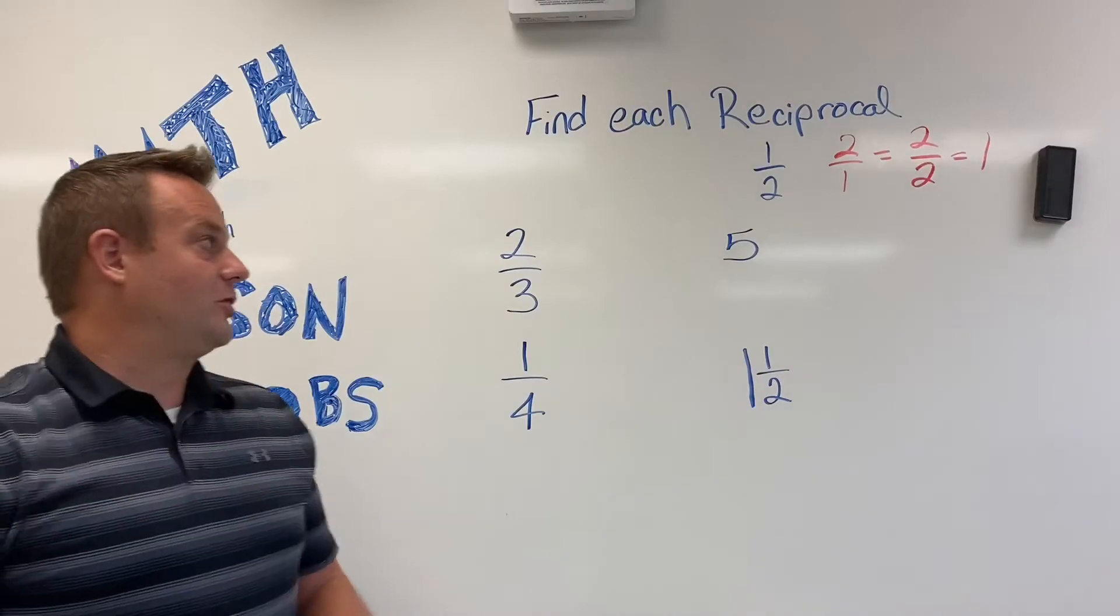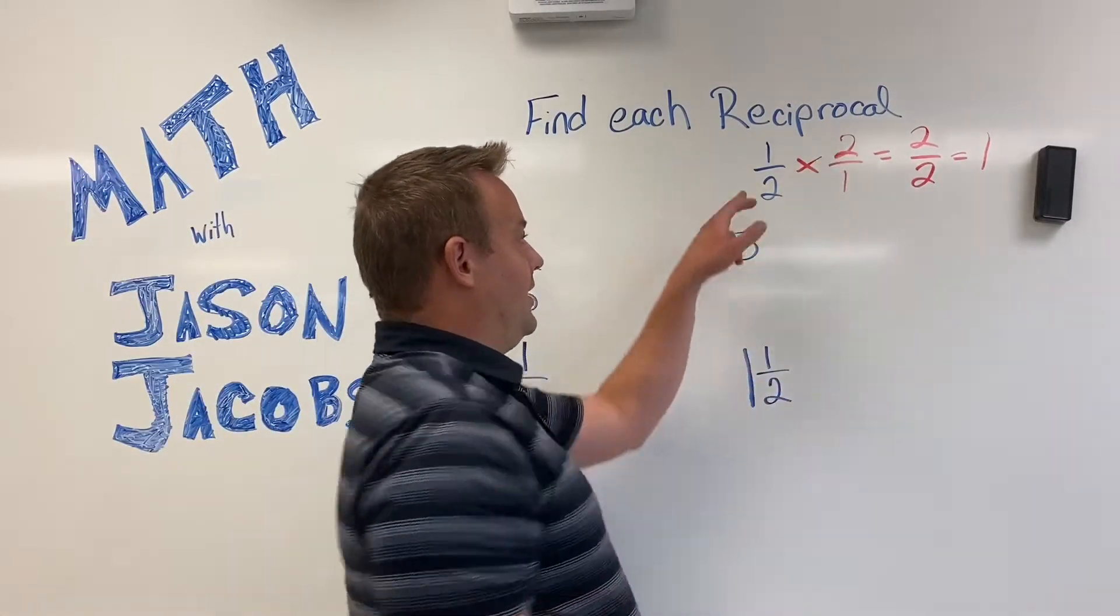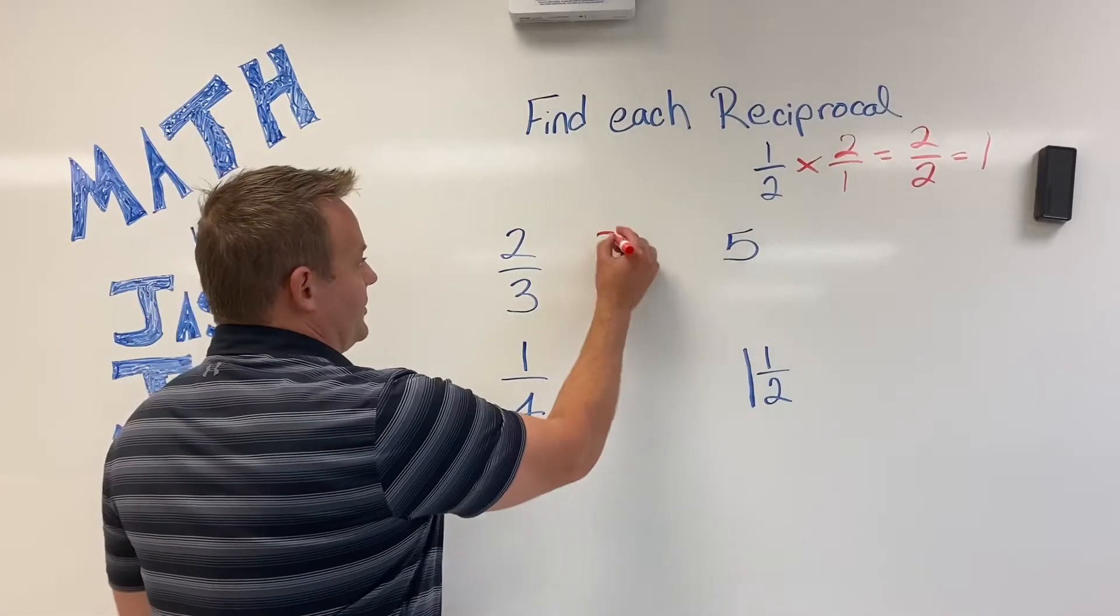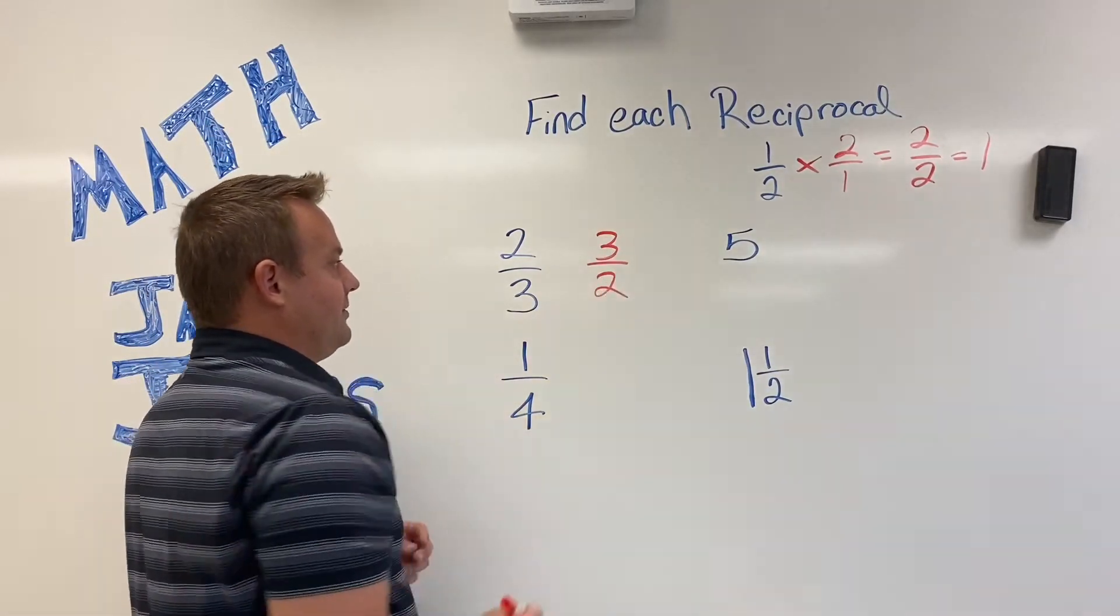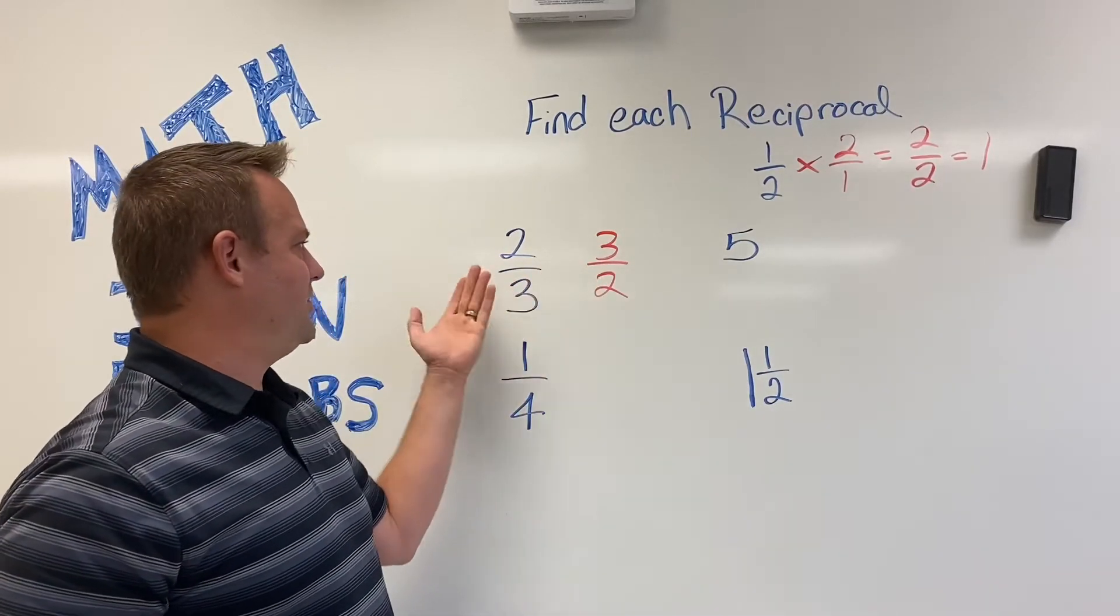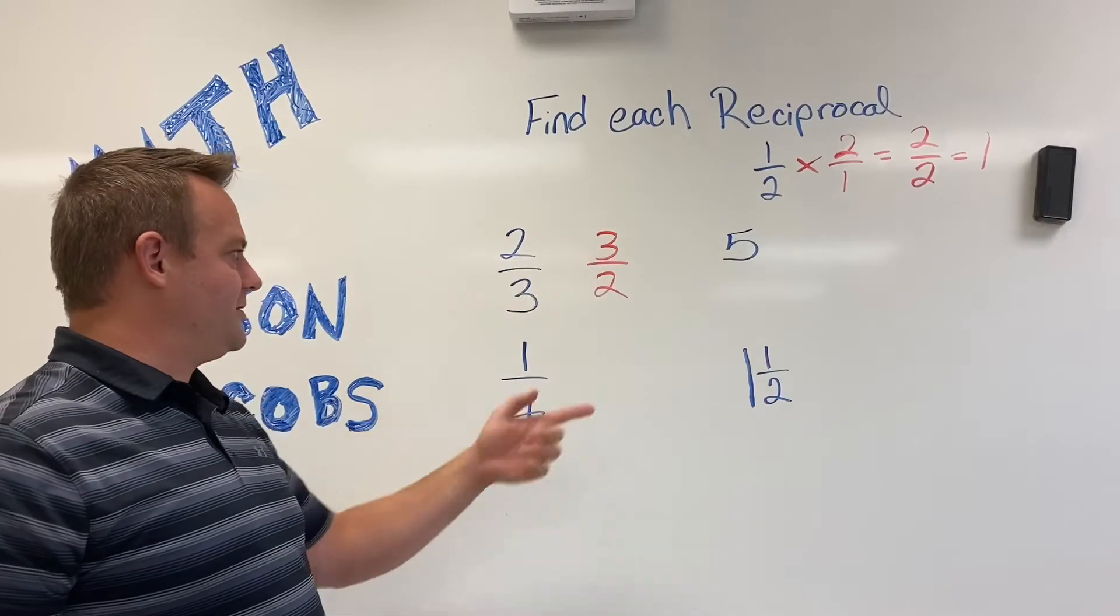So, there is a reciprocal as long as this is not a zero. What's the reciprocal of two thirds? Well, you just flip them. So, that would be three halves. I don't put an equal sign there because two thirds does not equal three halves. But the reciprocal of two thirds is three halves.